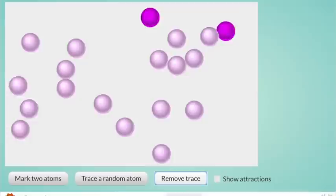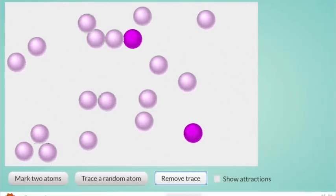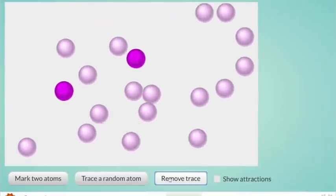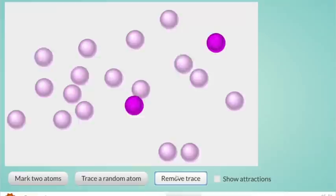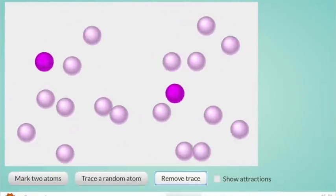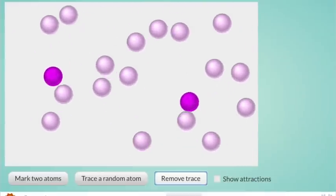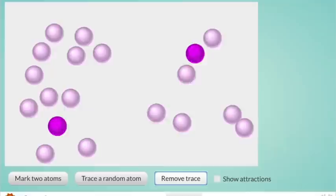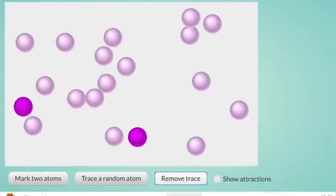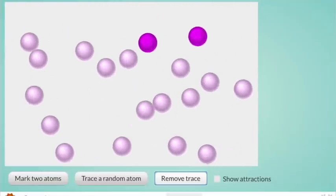So what does this model tell us about gas matter? What does it tell us about the particles that make up air and other gases in our world? How does this model help us think about a cough or a sneeze when it is in our lungs or when it's out in the air around us?